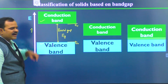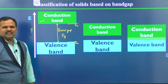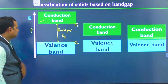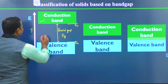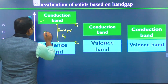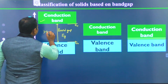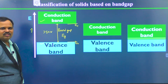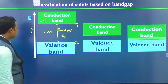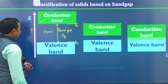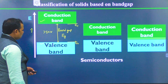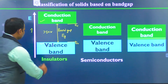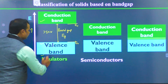Now, this is the bandgap of the material. If the bandgap of the material is greater than 3 electron volts or larger, then those materials are called insulators.